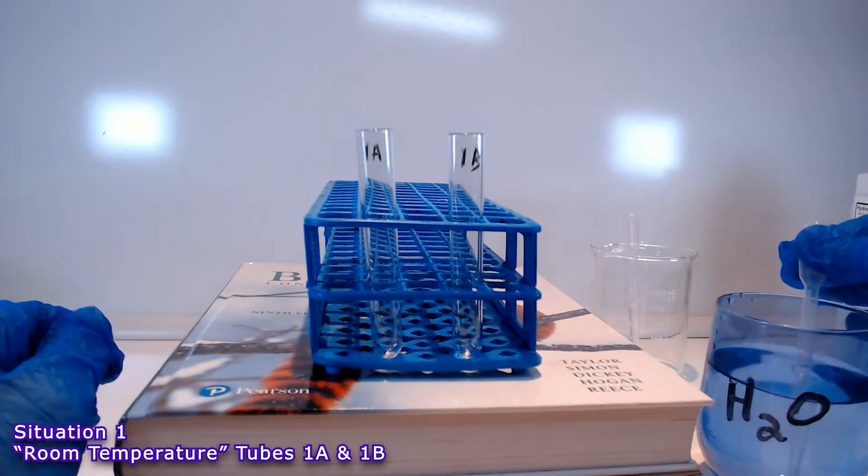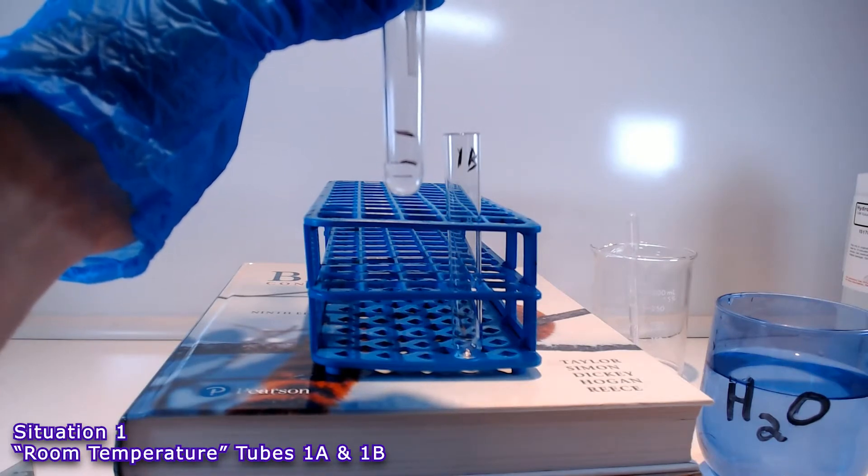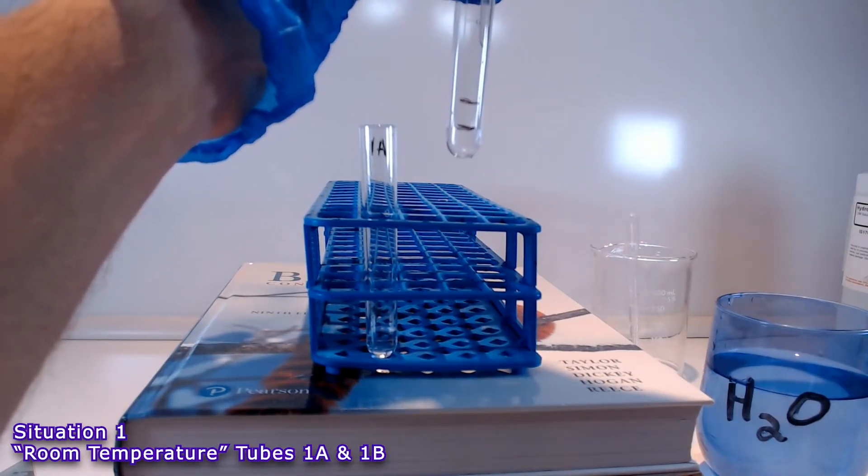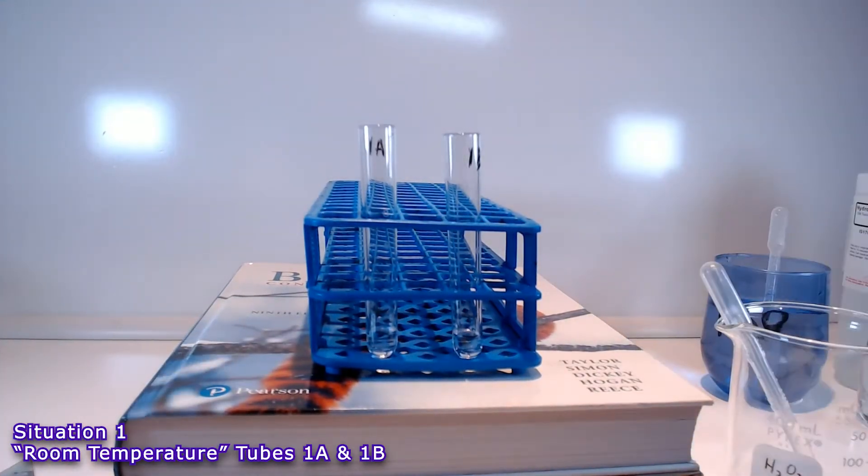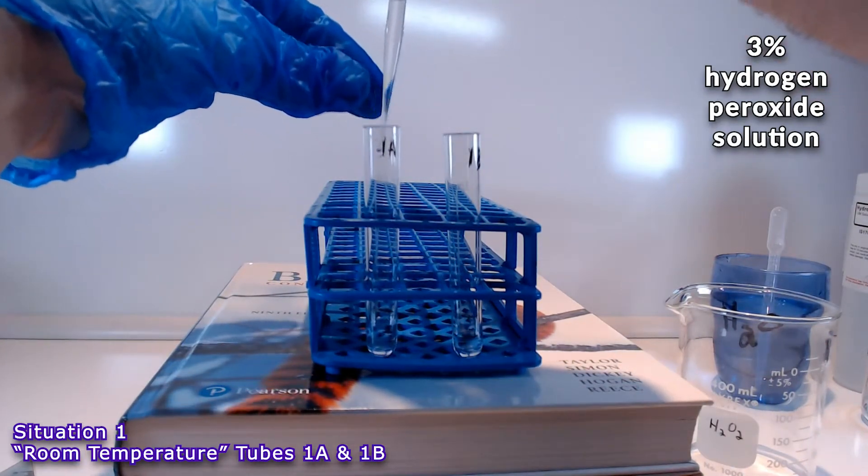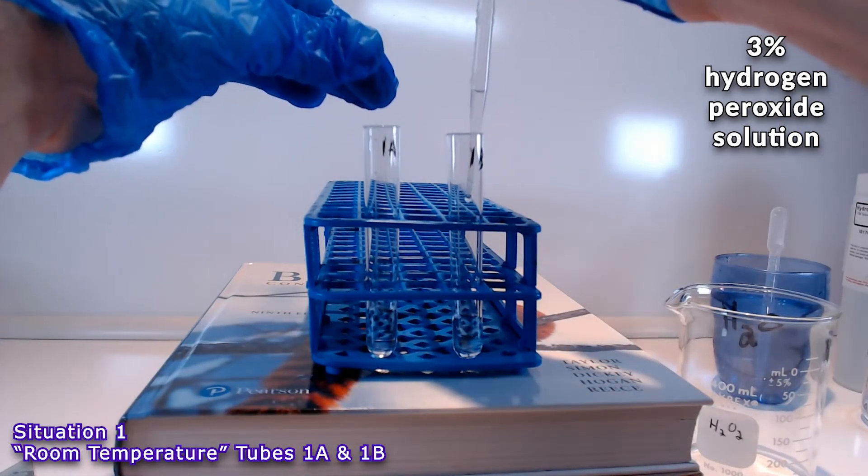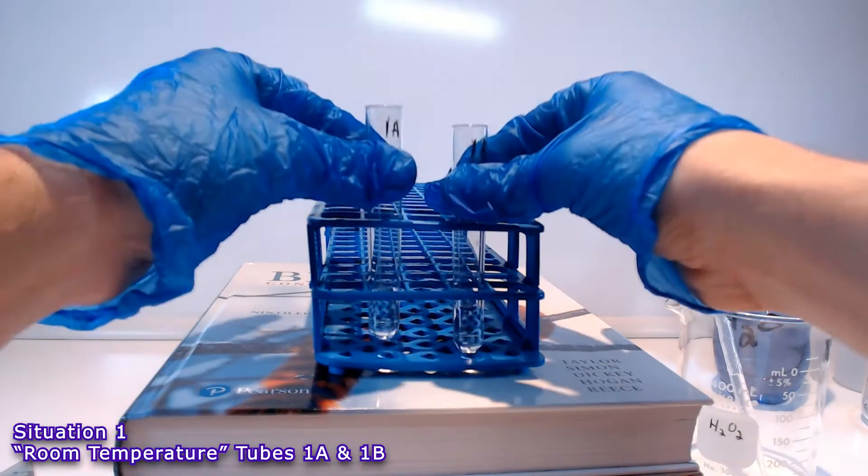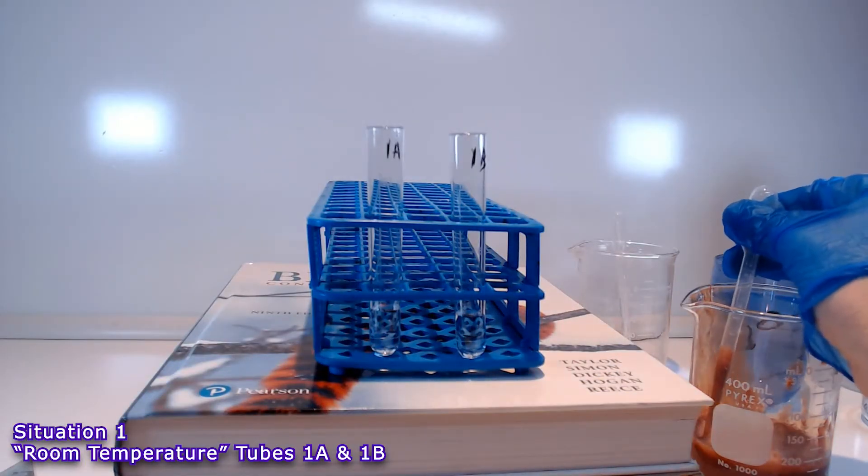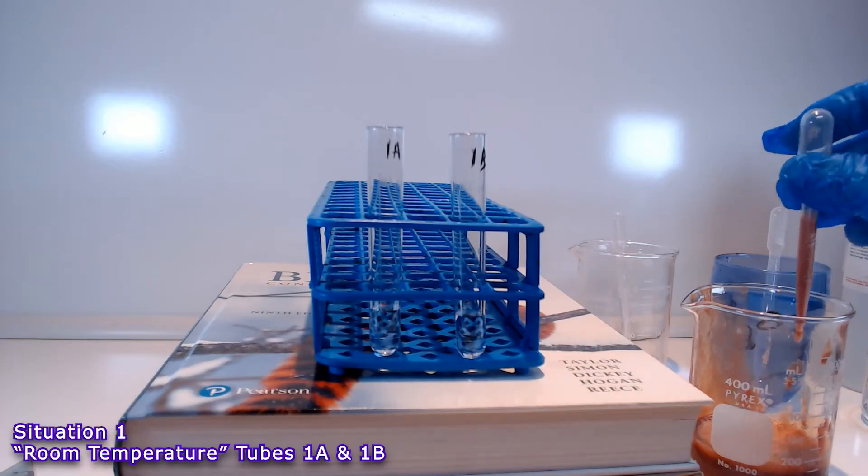Into tubes 1A and 1B, we fill them with water up to the one centimeter line. And then we fill the tubes with H2O2 hydrogen peroxide up to the two centimeter line. Now we're going to add five drops to each tube of our liver homogenate and watch the reaction.